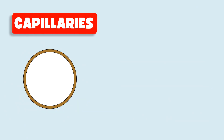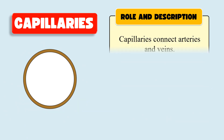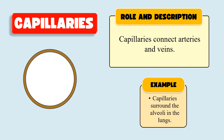Next, capillaries. These are very tiny or small blood vessels and they connect arteries and veins. They also support the exchange of substances between the blood and the body cells. An example of these capillaries includes the capillaries around the alveoli of the lungs.